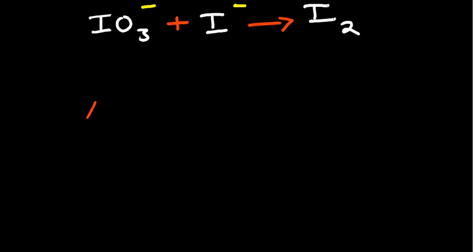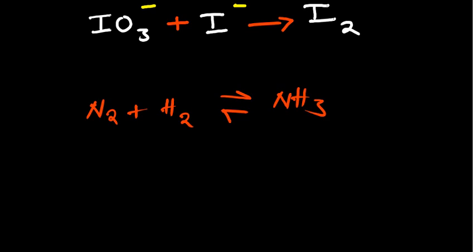For example, if you look at the process where we have nitrogen and hydrogen reacting to give us ammonia, this is the kind of equation we're able to balance by observation. We observe: on the left hand side I've got three hydrogen atoms, on the right hand side I've got two. So we multiply by three over two, and then multiply the entire equation by two. After multiplying by two, we have a two here and a two there, and the equation is balanced.